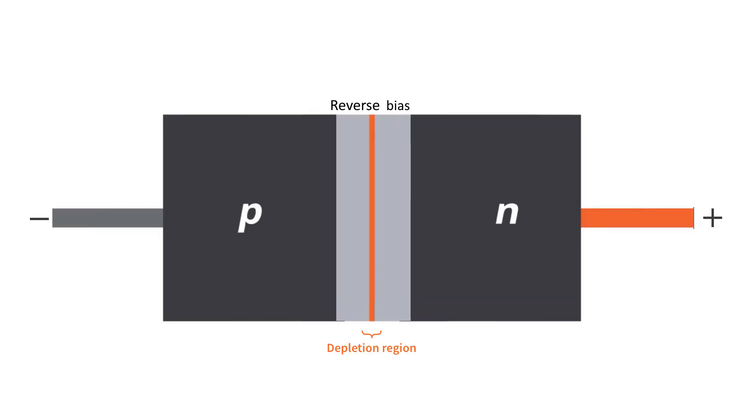When a diode is connected in a reverse bias condition, a positive voltage is applied to the N-type material and a negative voltage is applied to the P-type material.